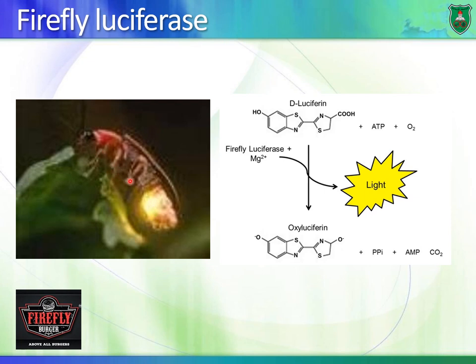The tail lights up because there is an enzyme known as luciferase. What luciferase does is convert a molecule known as luciferin into oxyluciferin, producing light. Just like green fluorescent protein, scientists have taken advantage of the luciferase enzyme.